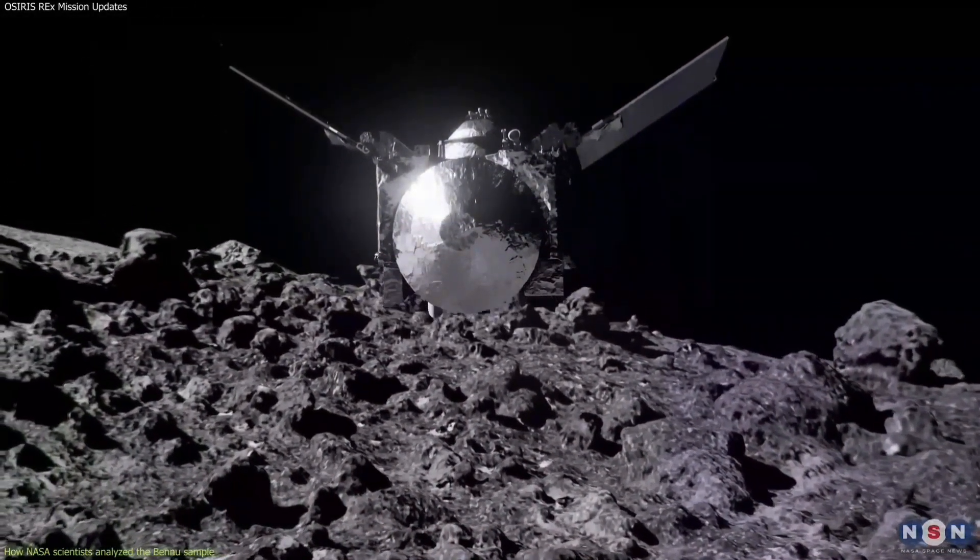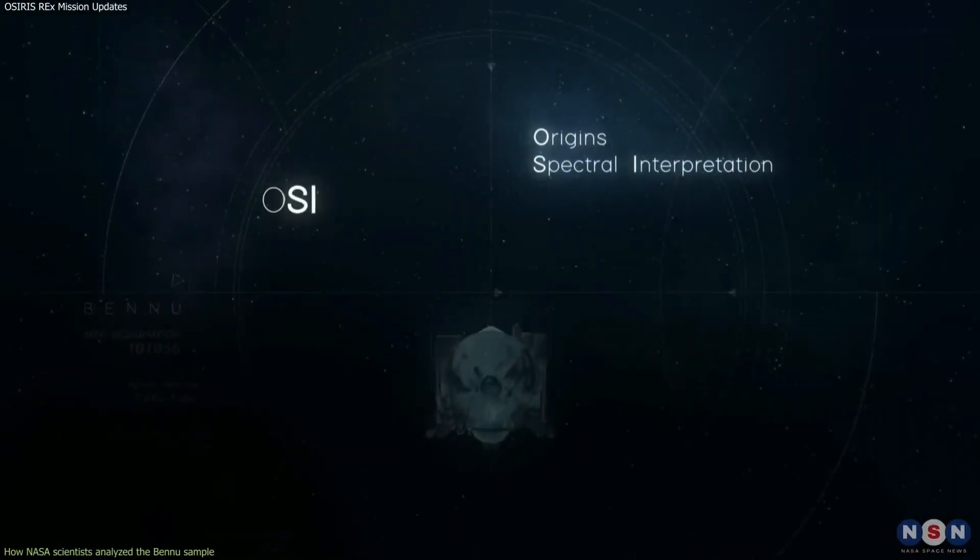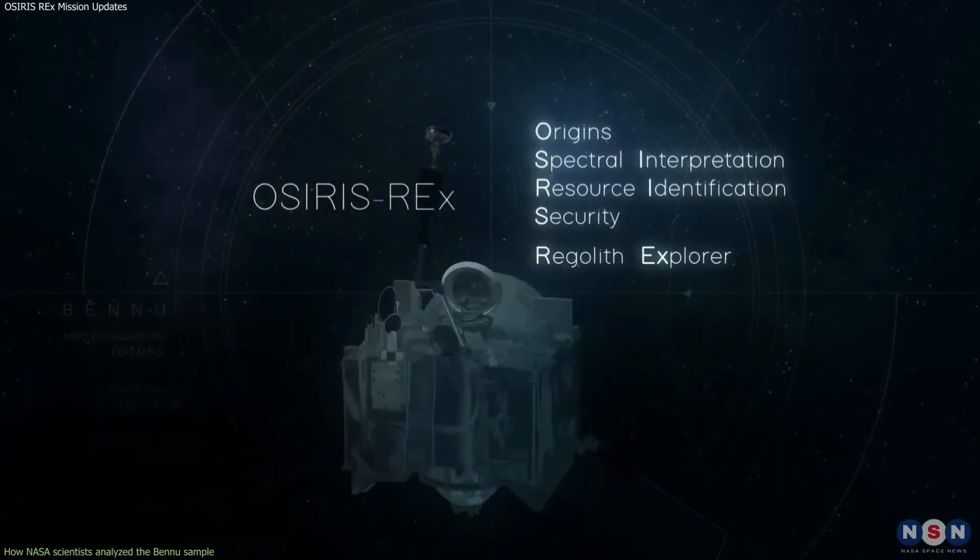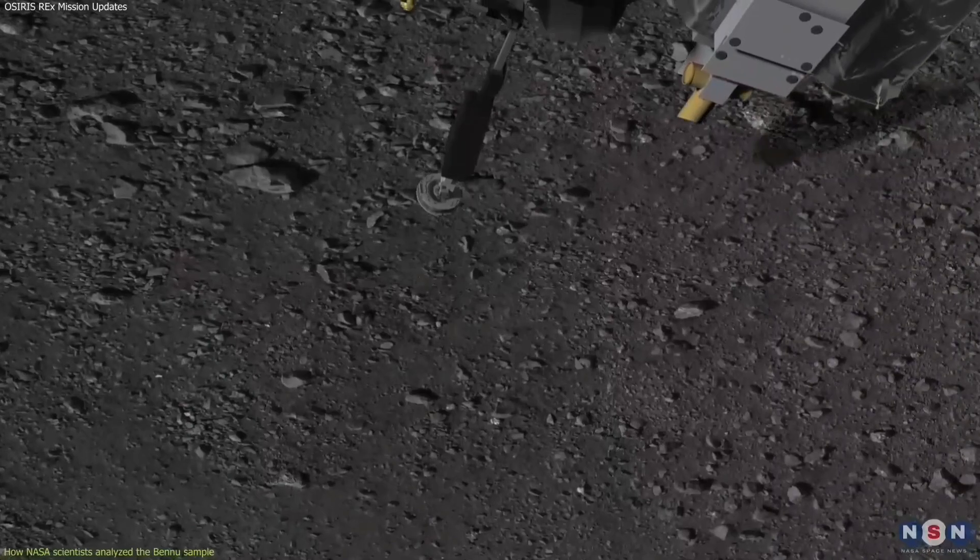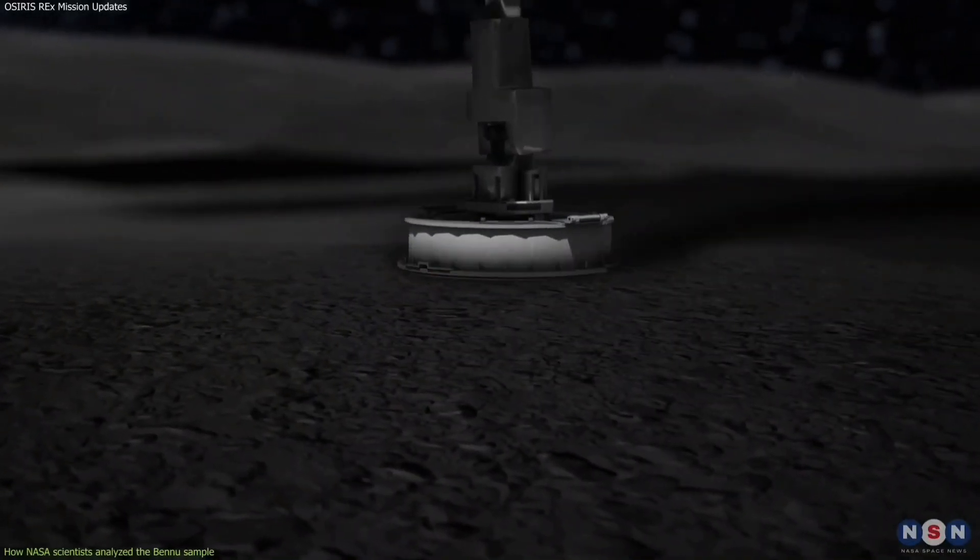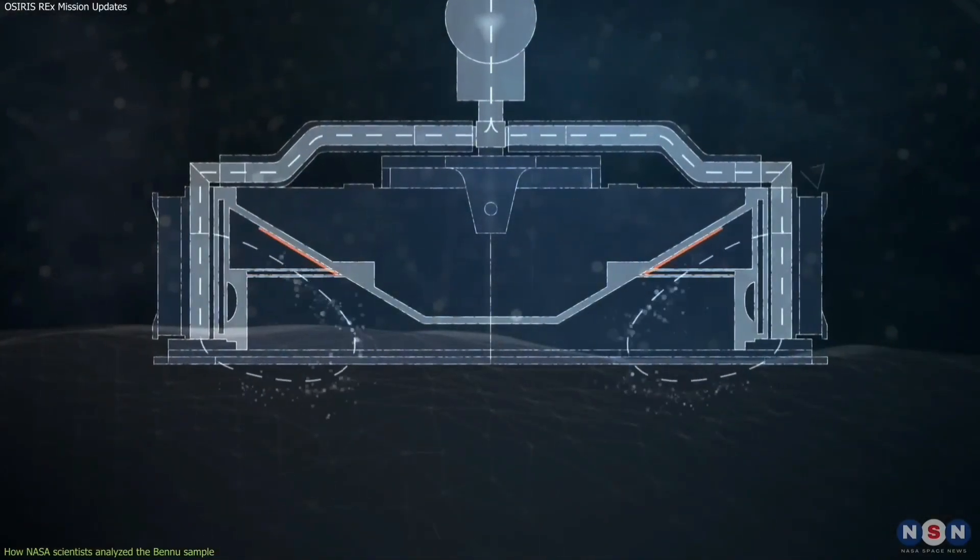NASA came up with this clever solution, a robotic spacecraft called OSIRIS-REx, which stands for Origins, Spectral Interpretation, Resource Identification, Security Regolith Explorer. This spacecraft collected a sample from Bennu using a robotic arm and a sampling device that briefly touched the surface and fired a burst of nitrogen gas to stir up some dust and rocks.